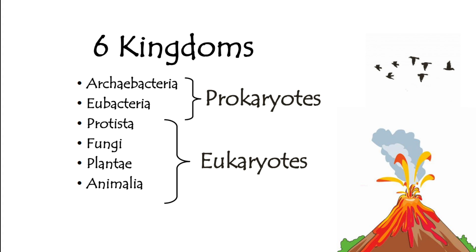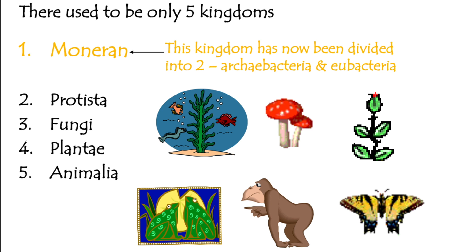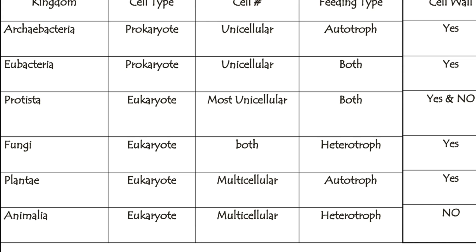Eubacteria are the common bacteria — they're all over the place, all over your desk, all over whatever you're touching right now. Archaea and Eubacteria used to exist in the same kingdom; there used to be only five kingdoms because scientists could not differentiate between them, but we have since separated them. Here is a brief table identifying the three criteria — cell type, cell number, and feeding type — for each kingdom. This is your responsibility to study on your own and you will be assessed on it.